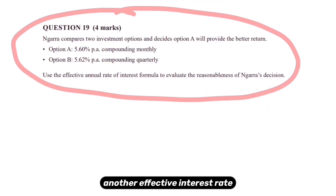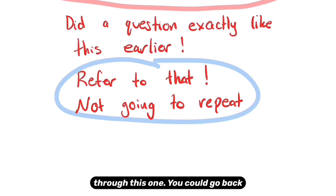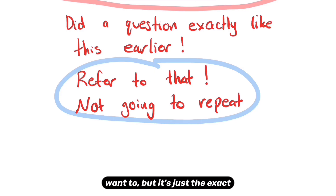This next question is another effective interest rate question. It's the same process as the earlier one with new numbers, so I'm not going to go through it — you can go back and look at the previous worked example.